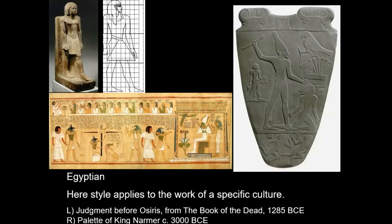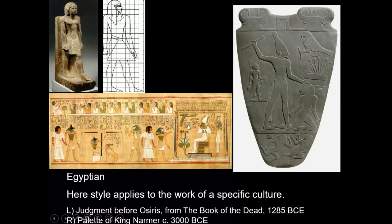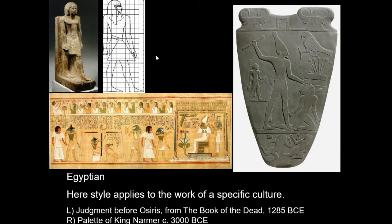The art of Egypt pretty much didn't change for about 2,000 years. The example at the far right is a carving from the foundation of Egyptian culture, and the painting from a Book of the Dead is separated from it by about 1,500 years. When you look at the styles — the way the figures are drawn, the proportions, the poses — they are virtually identical. Once the Egyptians settled on how the figure would be presented, that stayed unchanged for about 2,000 years: style of an entire culture.